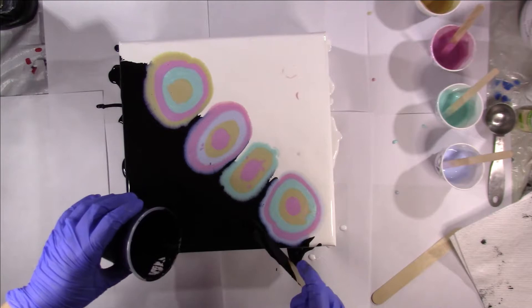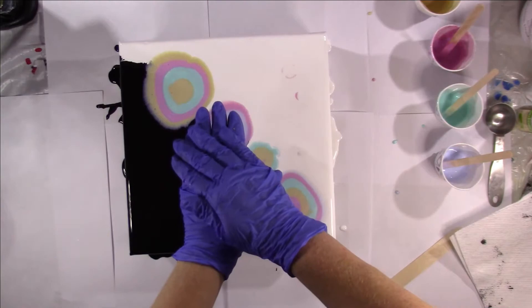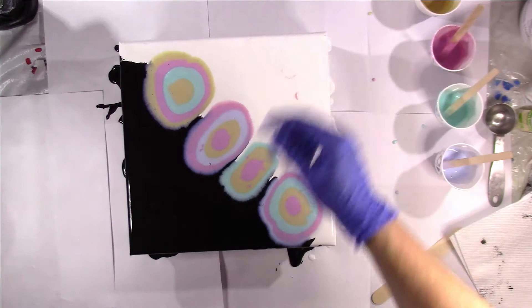Because the idea of a Dutch pour is you take the thicker colors on the outside, and you blow them on top to overlap, and then you blow the color out. So, let's see if I did that right.